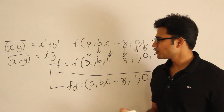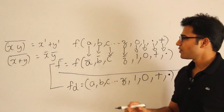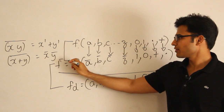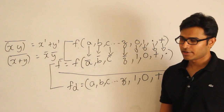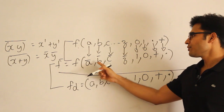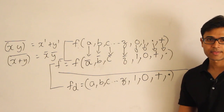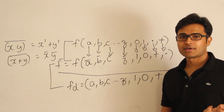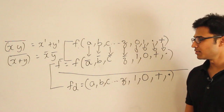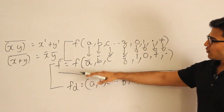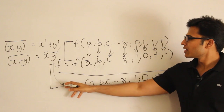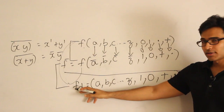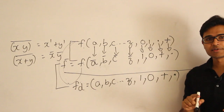The relationship between complementation and duality is simple. If you take the complement of the function and then complement all the literals again, you get the dual. You can also go directly from f to dual, and from dual to complement: find the dual and then complement the literals.